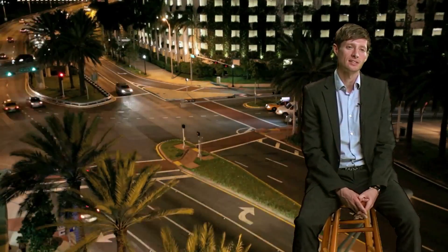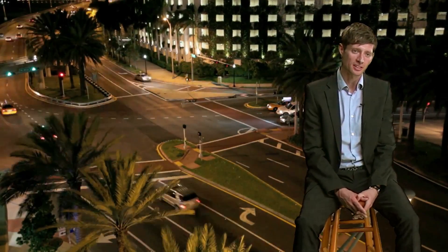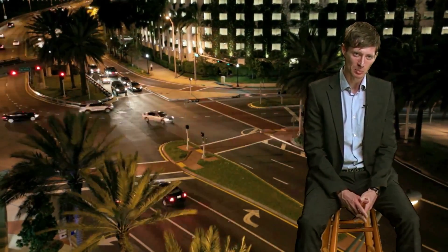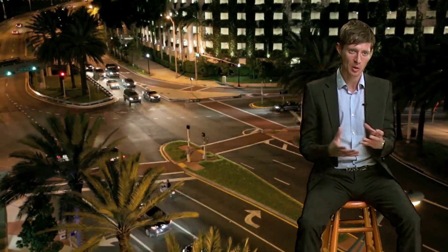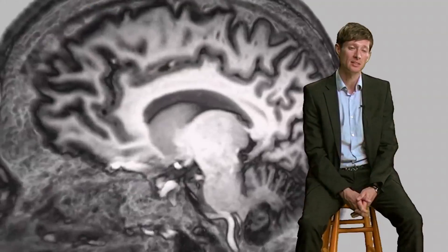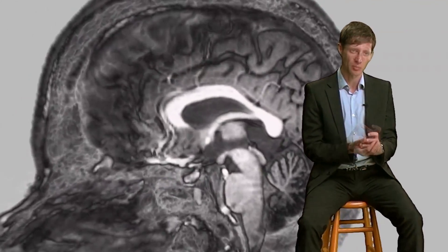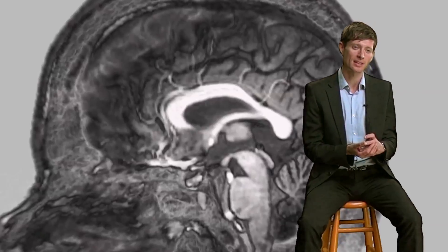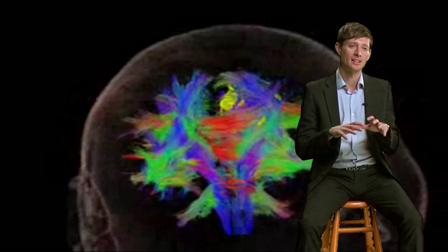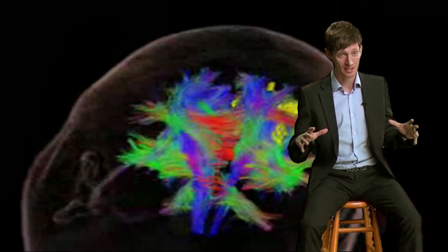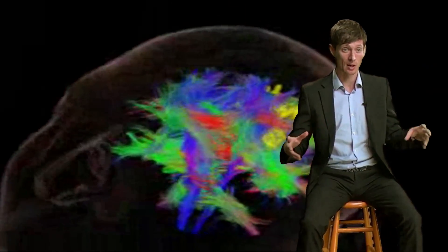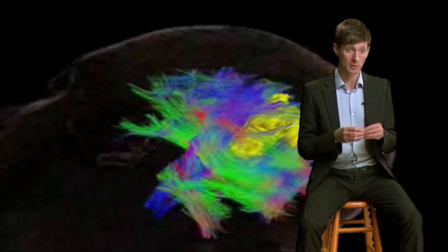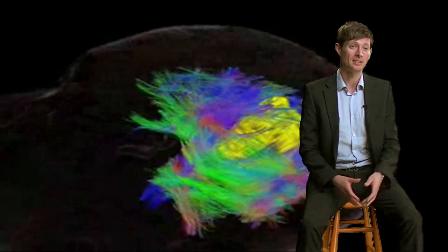If you think of it analogously to a road junction, different routes to different places are brought together at a common junction. This is very true of one hub in particular — the posterior cingulate cortex — where a number of different networks in the brain are all represented within this one spatially local unit.